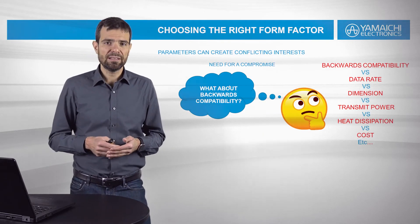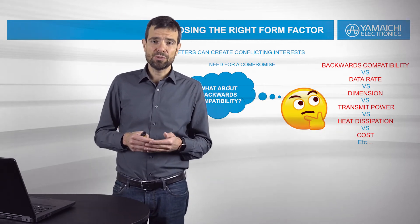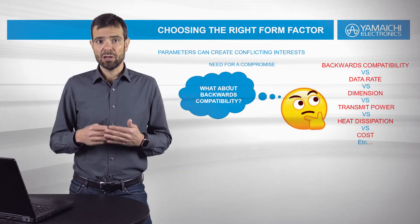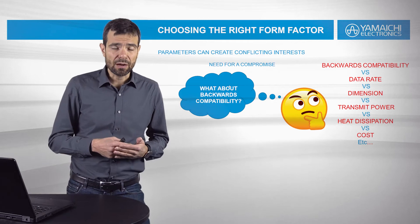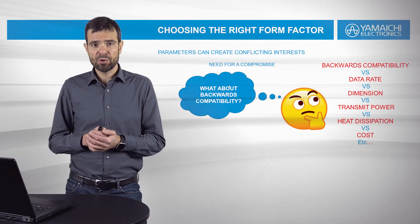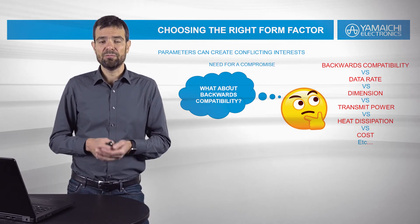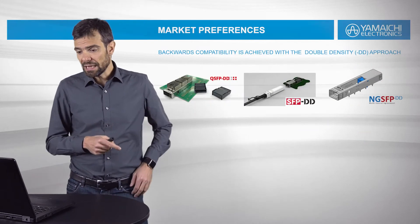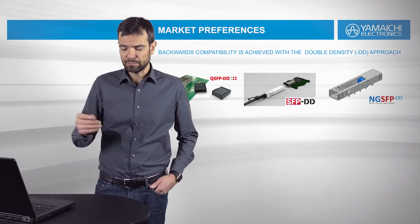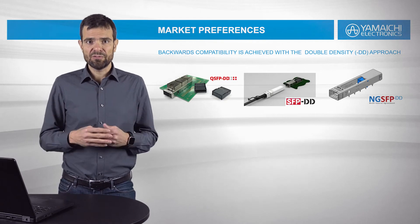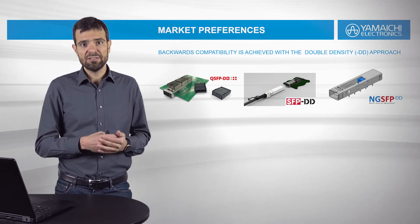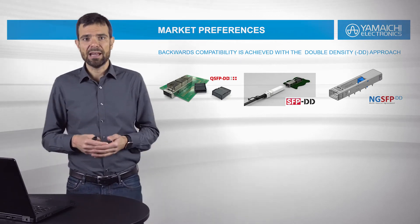Choosing the right form factor isn't always easy because parameters can create conflicting interests. Backwards compatibility conflicts with data rates; transmit power conflicts with heat dissipation. As a first point, we would like to address backwards compatibility, which is achieved with the double density approach, or DD. Some form factors already widely accepted by the industry include QSFP-DD, SFP-DD, and NGSFP-DD.